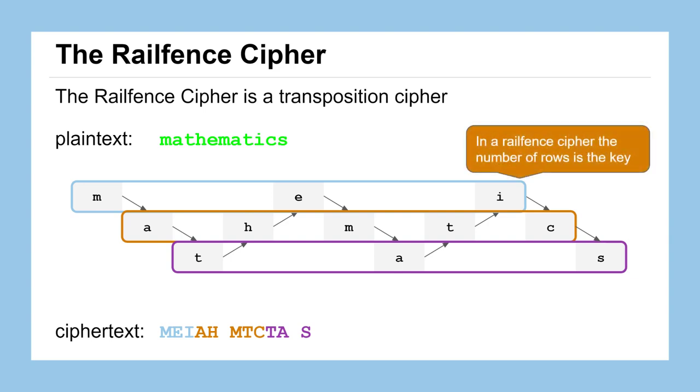In a railfence cipher you can see it's pretty flexible depending on the number of rows. We'll indicate the key of this cipher to correspond to those number of rows. You could extend this out to do a railfence cipher with four rows, five rows, and so on. You just have to keep zigzagging back and forth.